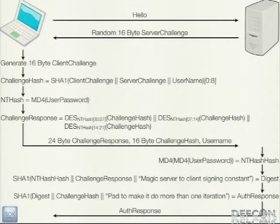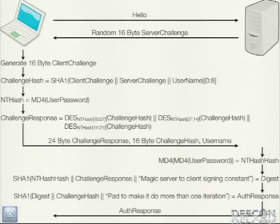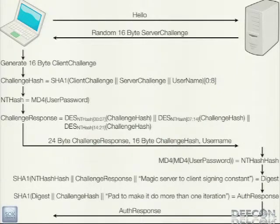Client sends hello. Server sends back a 16-byte random challenge. The client generates its own 16-byte random challenge, calculates SHA1 of the server's challenge, the client's challenge, and the username. Calculates the NT hash of the user's password, and then calculates the challenge response by encrypting the challenge hash three different times with three different DES keys, which are different sections of the NT hash of the user's password. Sends back the 24-byte challenge response, the 16-byte challenge hash, and the username in the clear to the server, who then calculates the MD4 of the MD4 of the user's password — the password hash hash.